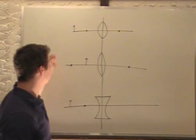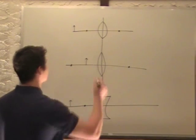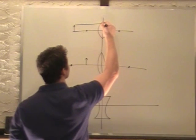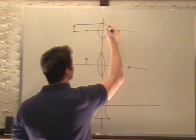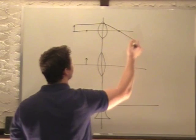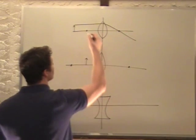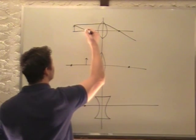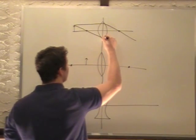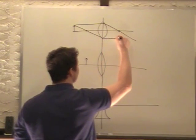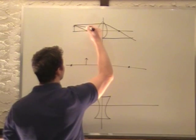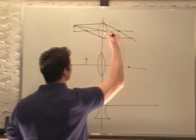The first ray I make is parallel to the axis. For the converging lens, it goes through the focal point on the other side. The next one goes through the focal point on the same side, and then it hits the center and goes parallel to the axis. The last one goes through the center, and through the center always goes straight through.